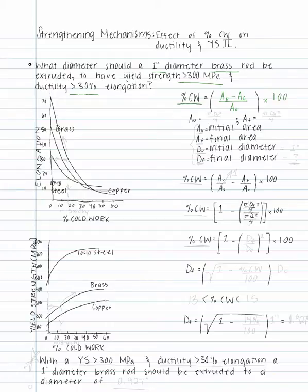Also, A-naught equals pi times d-naught squared divided by 4, and A-sub-f equals pi times d-sub-f squared divided by 4. Now we can define the variables in our equations. A-naught is the initial area, and A-sub-f is the final area.